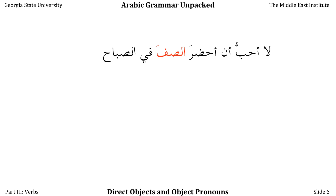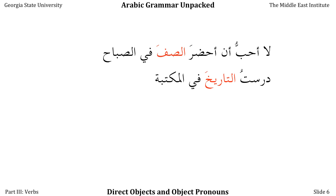Remember that in Arabic, whenever we talk about something in the abstract or in general, we try to use alif lam. So it says 'I don't want to attend the class in the morning,' but we really mean class in general. In this case, الصف is in the منصوب case — it has a single فتحة as its case marking because it's definite. A direct object that directly follows a verb will always be in the منصوب or accusative case. Similarly, in دَرَسْتُ التاريخَ في المكتبة, التاريخ is in the منصوب case, marked with a single فتحة.